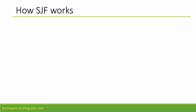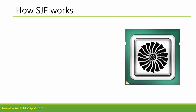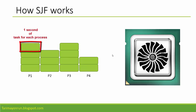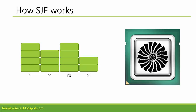Now let's look at how SJF works. This is our processor, and the fan inside the processor indicates it is working. P1, P2, P3, and P4 are our tasks on the list, where every block for every process represents a single amount of time — we are considering 1 second per block. So P1 is 4 seconds total, P2 is 3 seconds, P3 is 4 seconds, and P4 is 2 seconds.